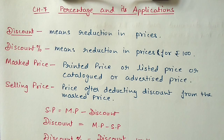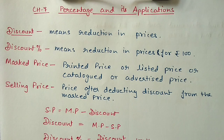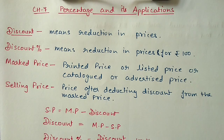First thing we have is discount. Discount means reduction in price, and discount percentage means reduction in price for 100 rupees. Next we have marked price — whatever the printed price on an article, or the listed price, catalog price, or advertised price — these are all other names of marked price.